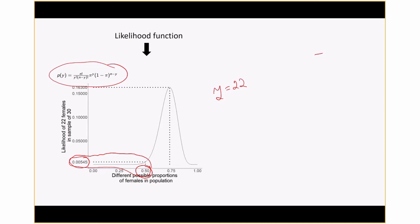On the other hand, if we calculated our estimate of pi hat as 0.733, we get a much higher likelihood. The likelihood associated with what we observed, Y equals 22, is 0.1630.